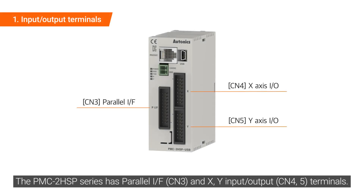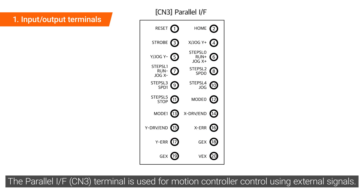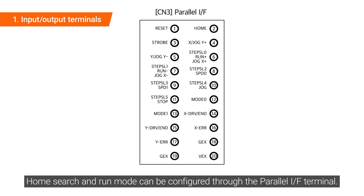The PMC-2HSP series has parallel I-F and X-Y input-output terminals. The input-output terminals are used for driver connection and general-purpose input-output. The parallel I-F terminal is used for motion control using external signals. Home search and run mode can be configured through the parallel I-F terminal.